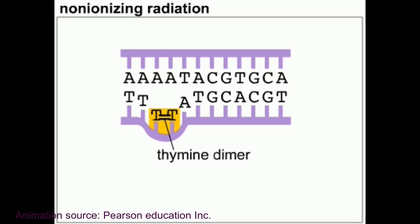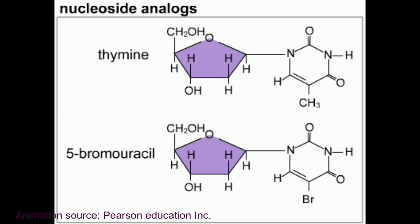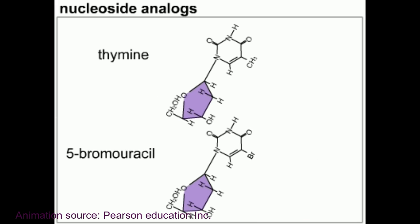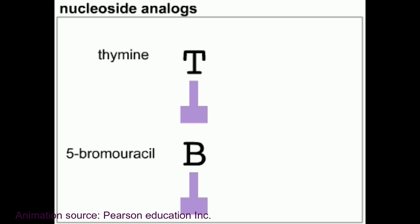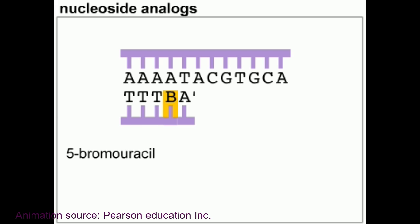The third type is nucleoside analogs. Nucleoside analogs are compounds that are structurally similar to normal nitrogenous bases but with different base pairing properties. These compounds can become incorporated into growing DNA during replication, replacing their related base. Once incorporated, the nucleotide analog can inhibit further replication or cause mismatching during replication.